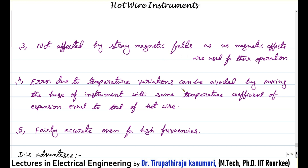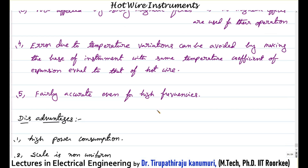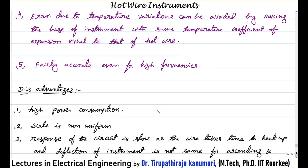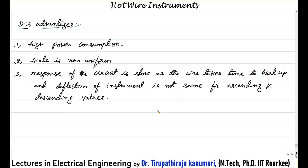Errors due to temperature variations can be easily avoided by making the base of the instrument with the same temperature coefficient of expansion as the hot wire, minimizing errors. It has fair accuracy even up to very high frequencies. Disadvantages: power consumption is very high because it depends on I square R loss, leading to a loading effect on the instrument. The scale is non-uniform, and response is slow as the wire takes time to heat up.